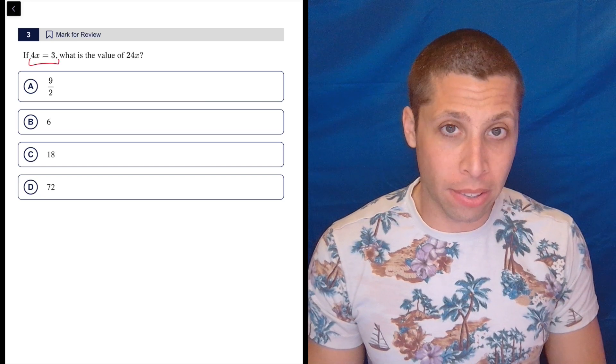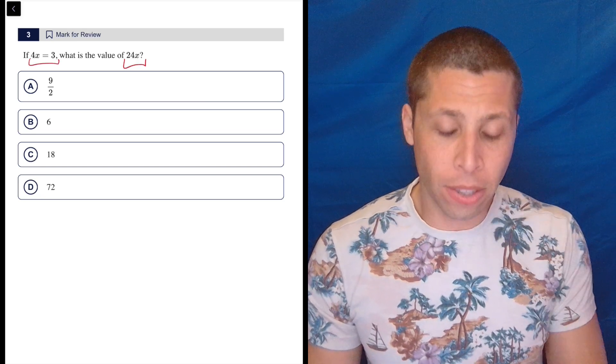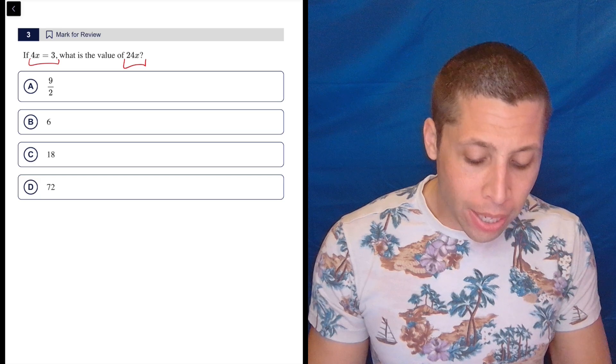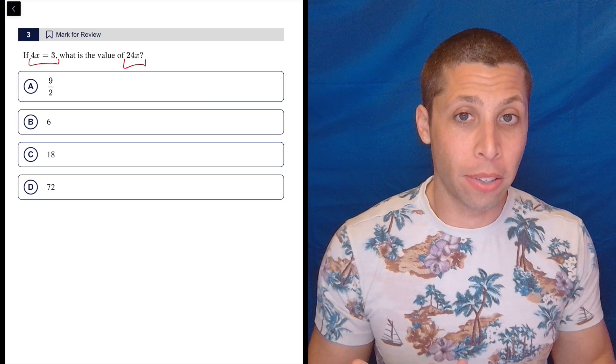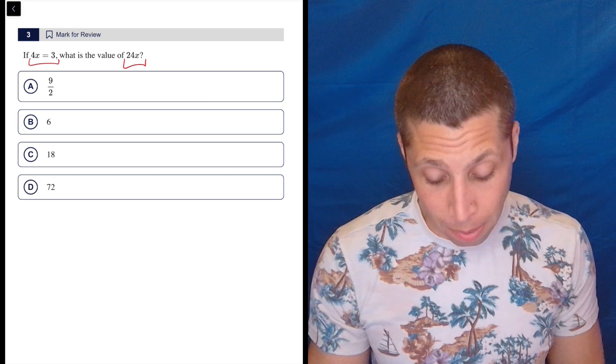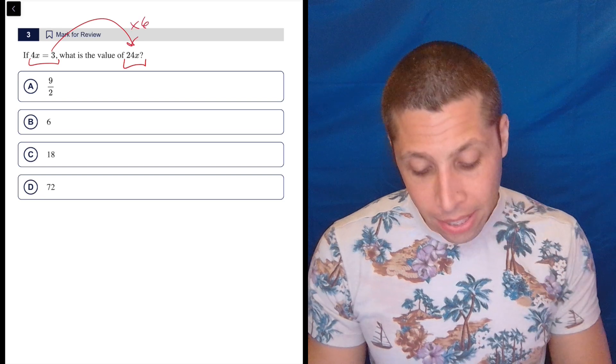So okay, they gave us that 4x is equal to 3. They want 24x. How do I get from 4x to 24x? Well, I know my times tables. I would multiply by 6.